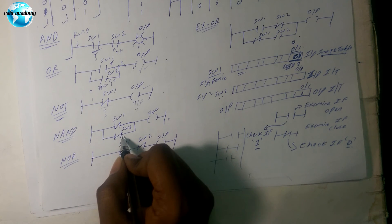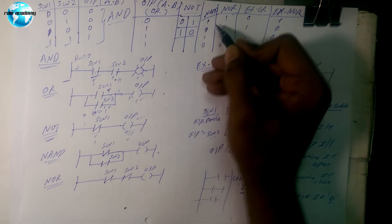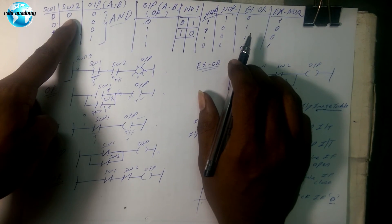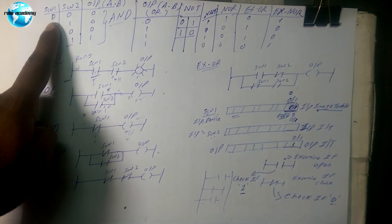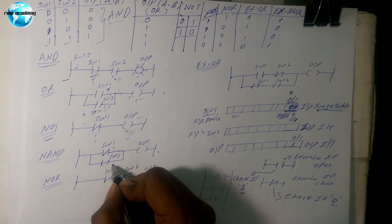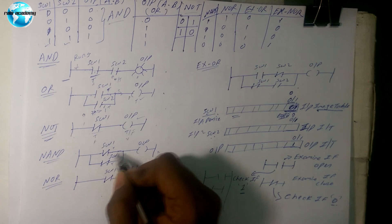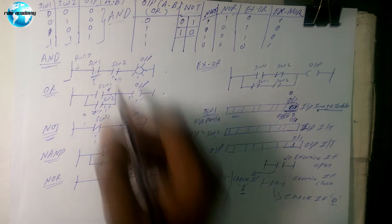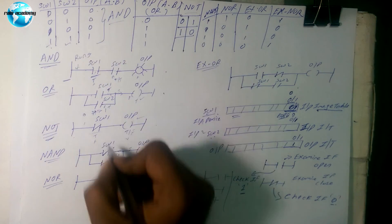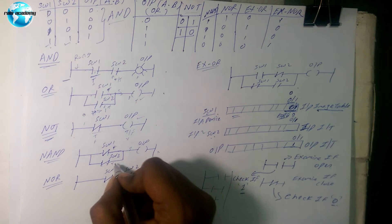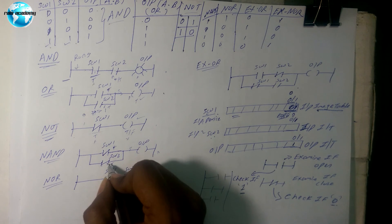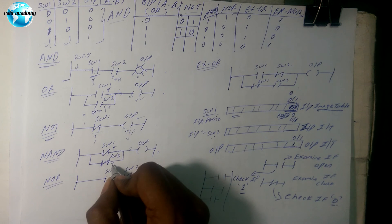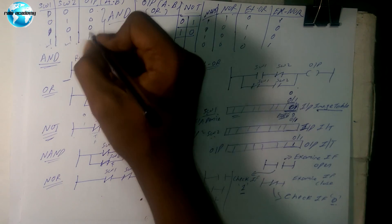Now for the NAND gate: NAND is NOT of AND. If both switches are not pressed, the contacts check for zero — true and true — so the output glows. That is because NAND of zero-zero is one. If one switch is pressed — say switch one is on — checking for one gives true but checking for zero for switch two is false, so the rung is false and the output will not glow. NAND not of AND — zero input means output is one.